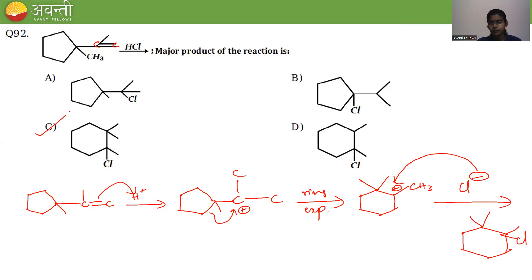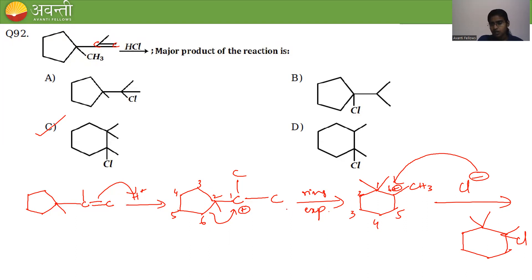After ring expansion, Cl⁻ attacks the carbocation to give the desired product. The six-membered ring with the chlorine substituent corresponds to option C, which is the correct answer.